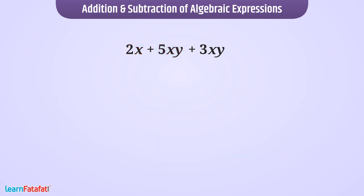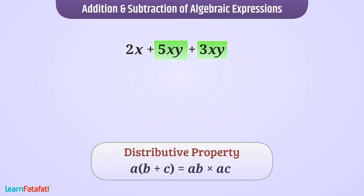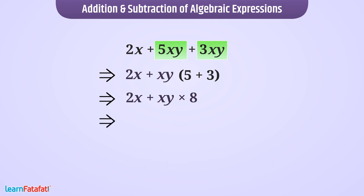Since algebraic parts are the same in these two terms we can take the algebraic factors common as per the distributive property. 2x plus xy multiplied by (5 plus 3) is equal to 2x plus xy into 8, which gives us the expression 2x plus 8xy.